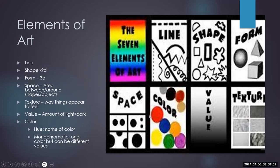Color is the most expressive element of art — it's usually what we think of first. It is produced by the reflection or absorption of light waves by the surface of the object. Color has three primary characteristics: hue, which is the name of the color; value, which is the lightness or darkness of the color; and intensity, which is the brightness or dullness. Artists use color to evoke emotions, convey meaning, and create visual interest in their work.